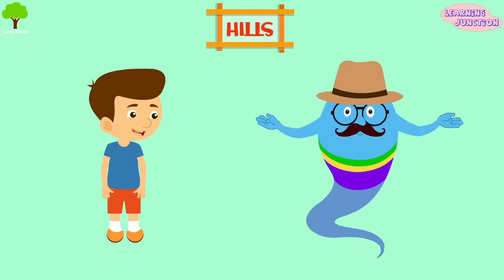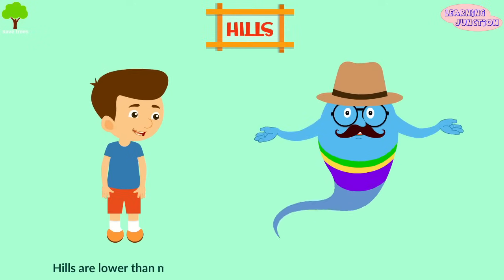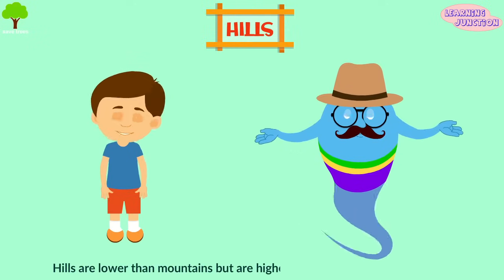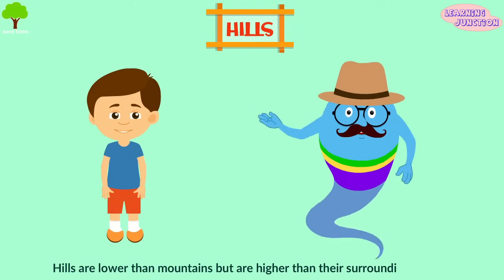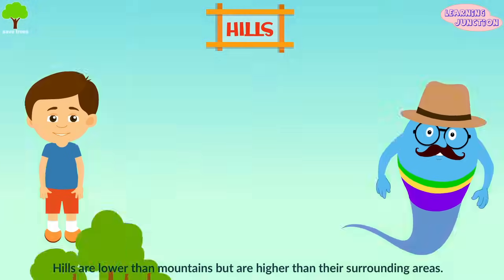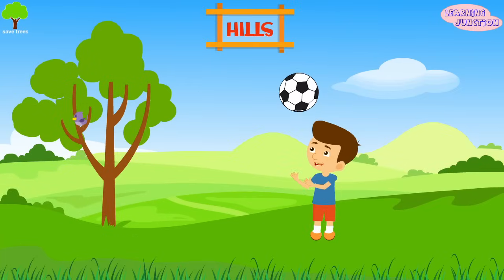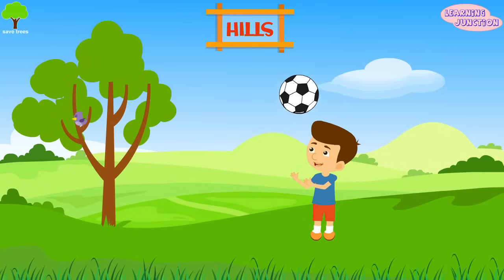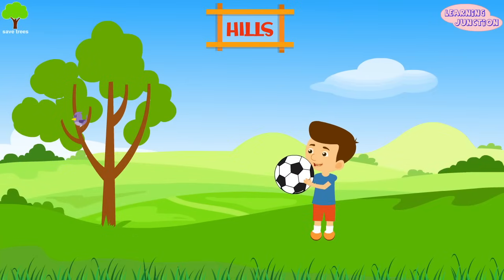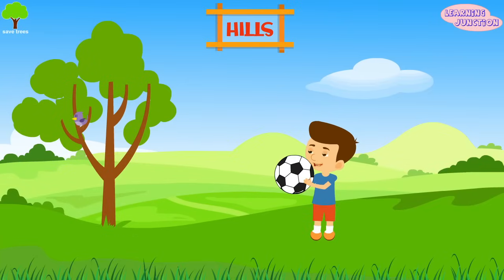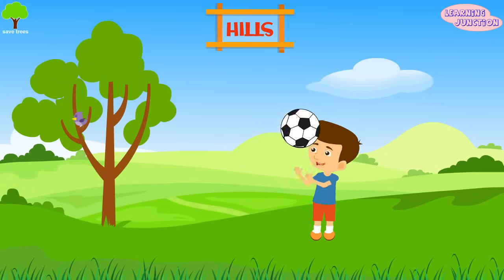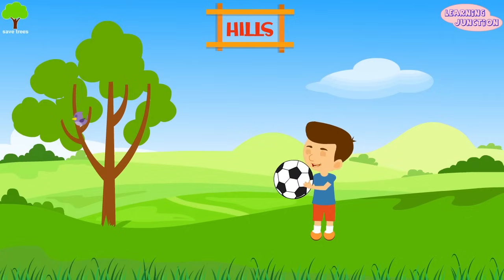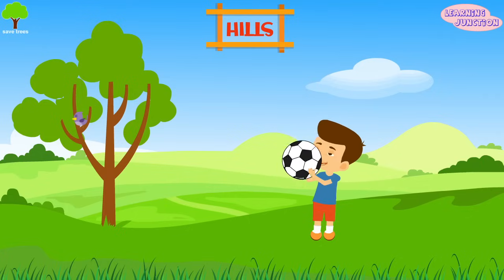Hills. Hills are lower than mountains but are higher than their surrounding areas. Hills occur on every continent in a variety of environments. They're usually covered with grass and make perfect tourist destinations.